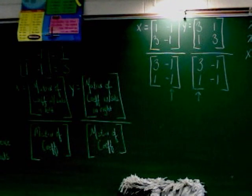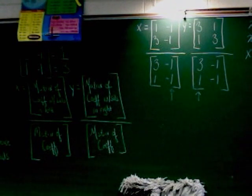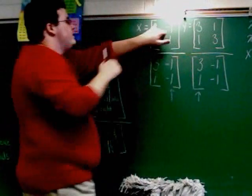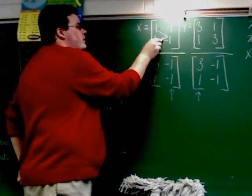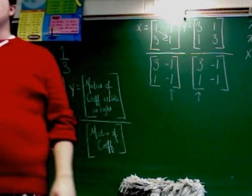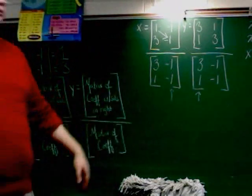So when we do work with the determinant, we always start in this top left corner and we multiply going down that way. So I do 1 times negative 1. That's negative 1.